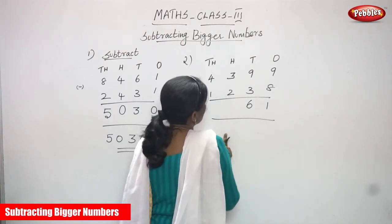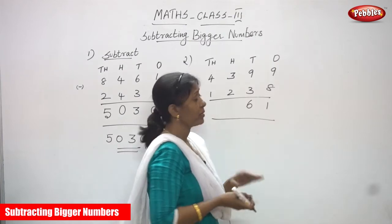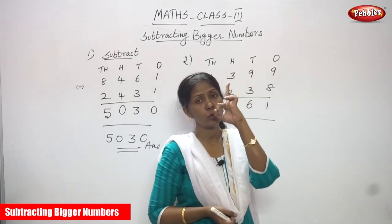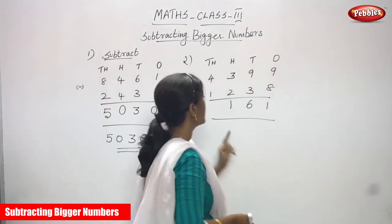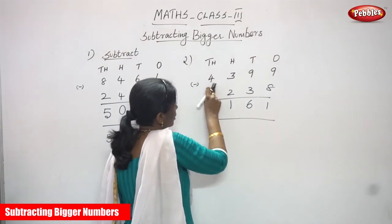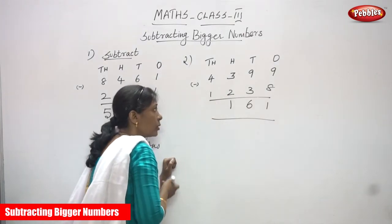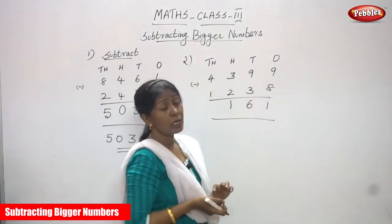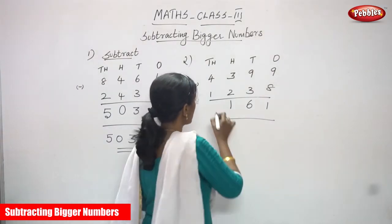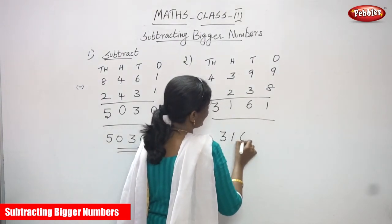Then the 100s place: 3 minus 2. After 2, only one step to 3, so 3 minus 2 gives you 1. You can also hold 3 fingers and fold 2 — you get 1. And the 1000s place: 4 minus 1. Backward counting after 1 up to 4: 2, 3, 4 — that is 3. So the answer is 3, 1, 6, 1.